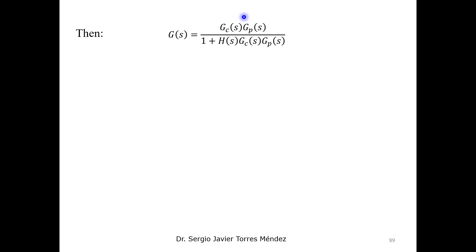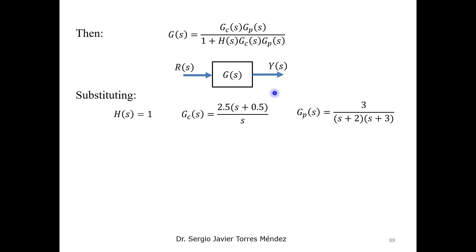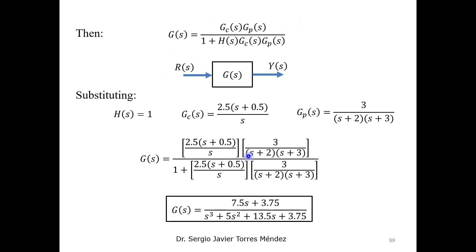After the algebraic operations, we obtain the transfer function relating output divided by input in the standard closed-loop form. This fraction represents the equivalent transfer function of the system, resulting in an equivalent block diagram with only the reference as input and y as output. Substituting the transfer functions for the controller, plant, and sensor gives the final transfer function for the initial block diagram.